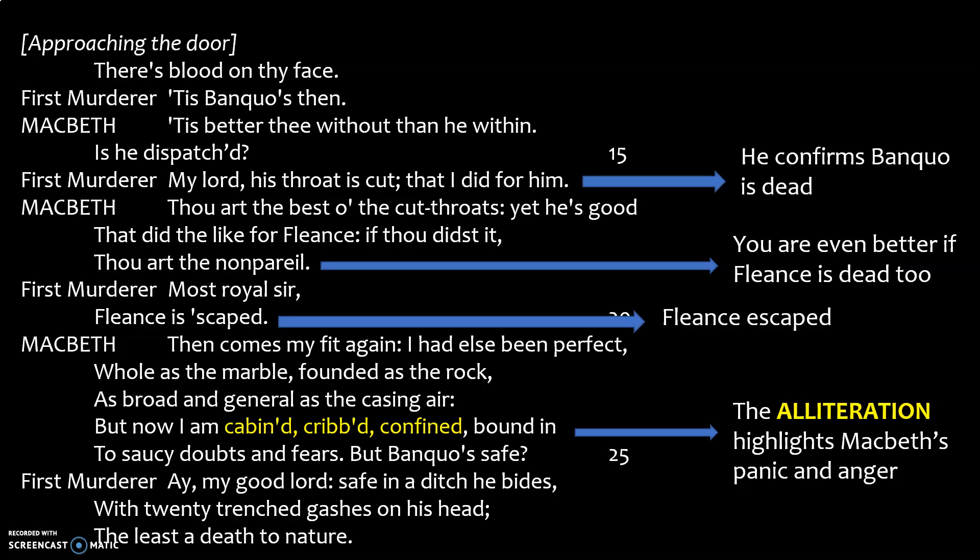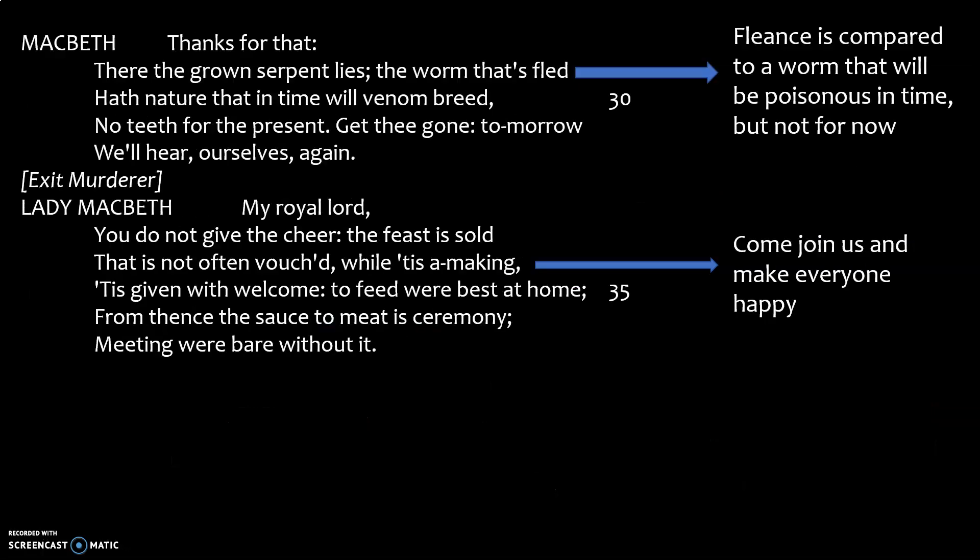He asks again: is Banquo safe? 'Safe in a ditch,' says the murderer basically, with twenty gashes on his head — so he's absolutely dead. Macbeth says 'there the serpent, the grown serpent lies' — references to a snake being untrustworthy. 'The worm that's fled' refers to Fleance, compared to a worm that's going to be poisonous in time, but for now 'no teeth for the present' — nothing that's going to hurt him for now. Off goes the murderer.